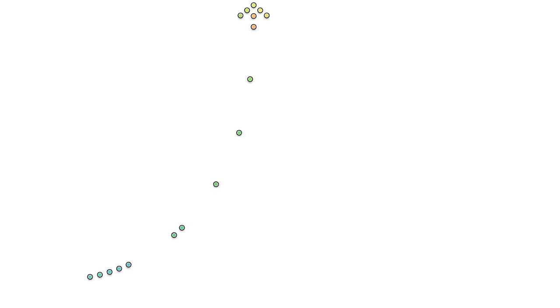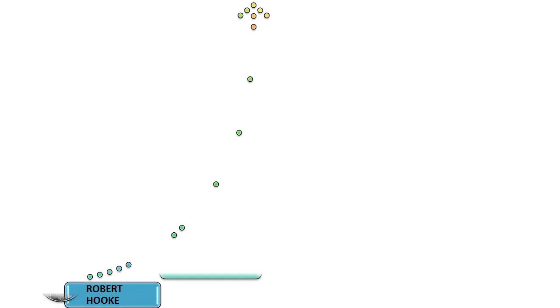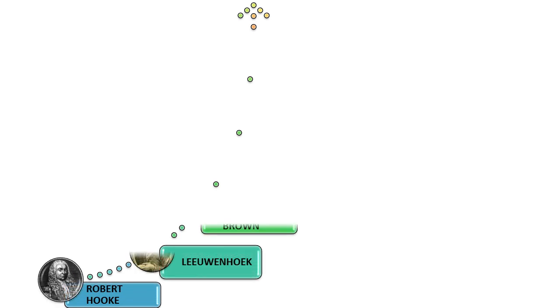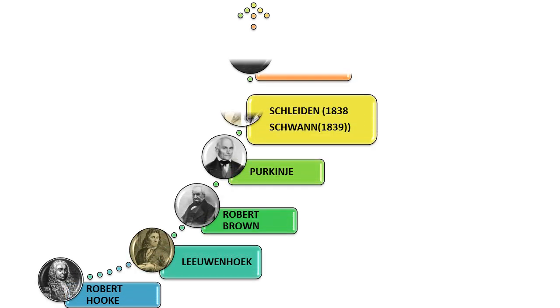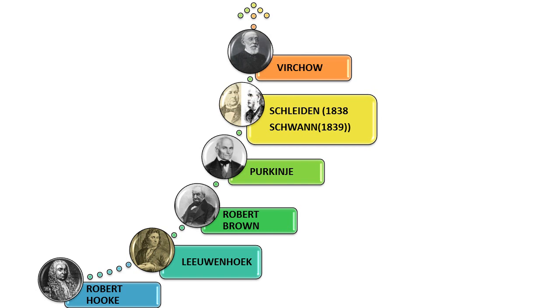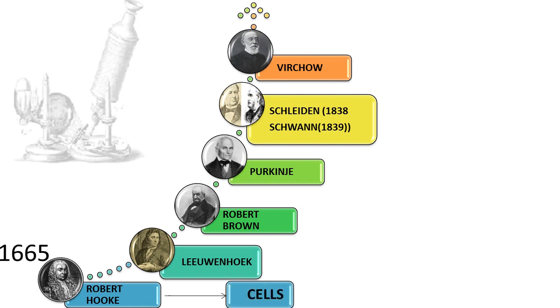The discovery of the cell is attributed to the scientist Robert Hooke. Robert Hooke, in 1665, discovered the cell.